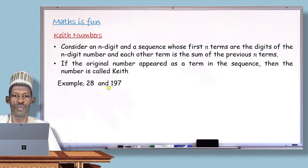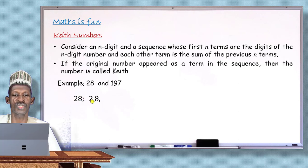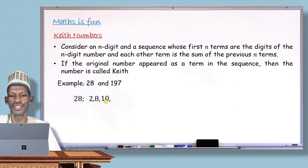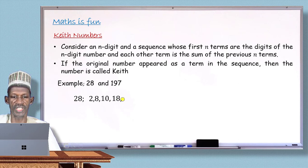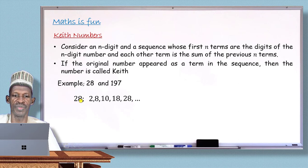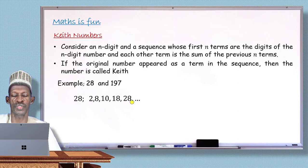For example, 28 is a case number. Since 28 has two digits, the sequence starts with 2 and 8. To get the third term, add the last two: 2 + 8 = 10. Fourth term: 8 + 10 = 18. Next term: 10 + 18 = 28. We have obtained 28 as a term in the sequence, confirming that 28 is a case number.